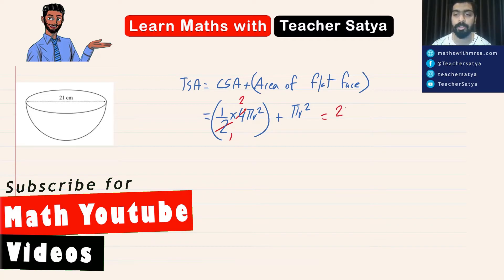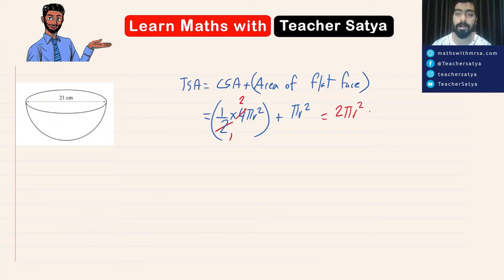Therefore, we have 2 pi r squared plus pi r squared, which is equal to 3 pi r squared. So this is the formula that we will be using in order to find the total surface area of this hemisphere.